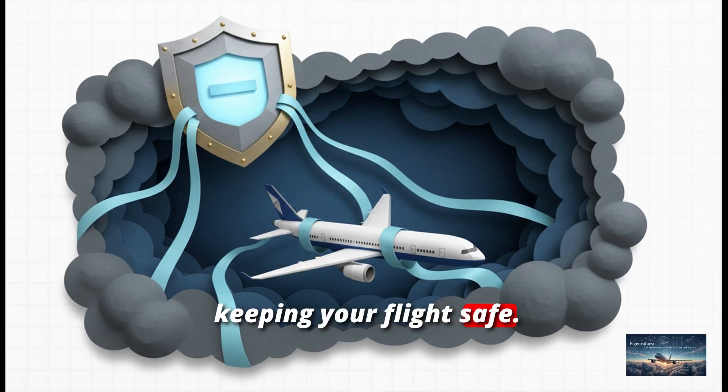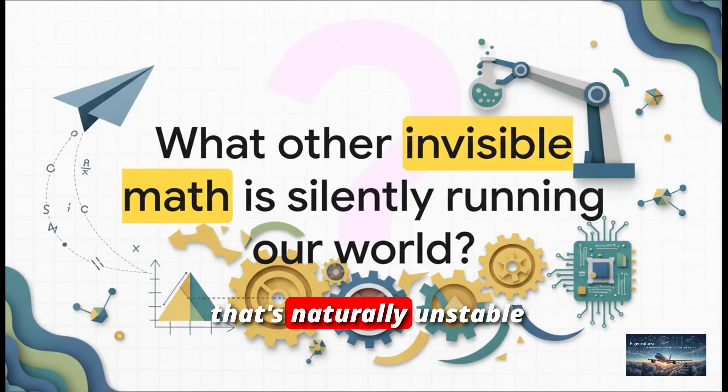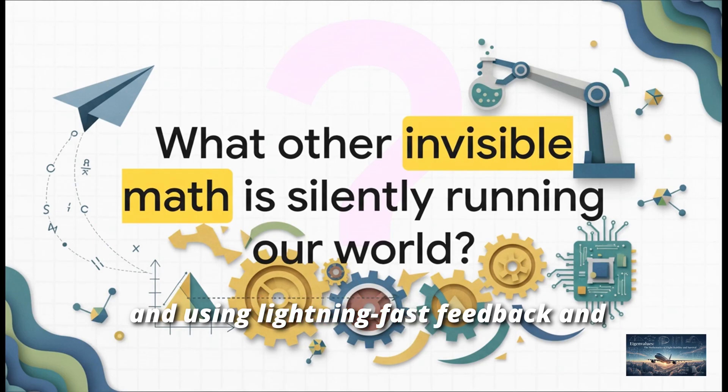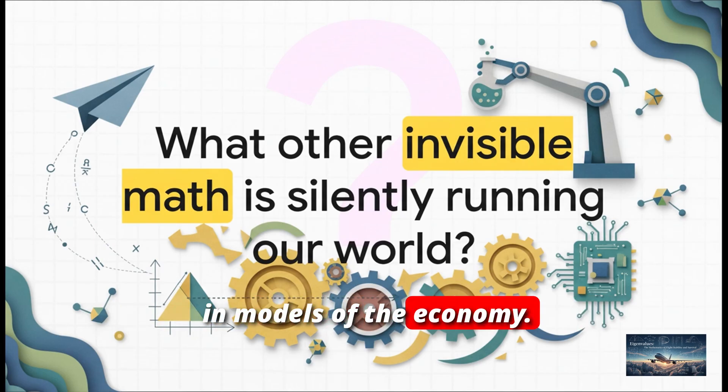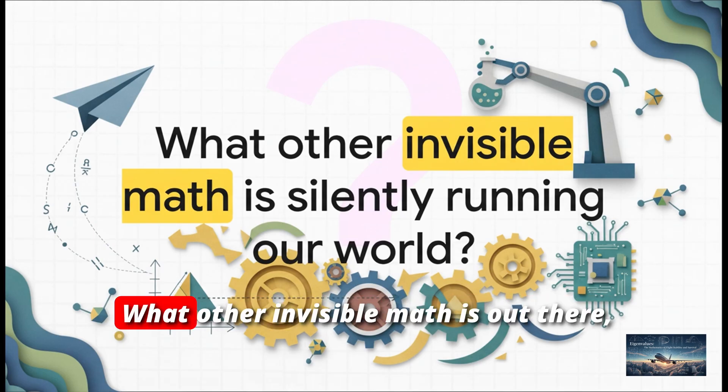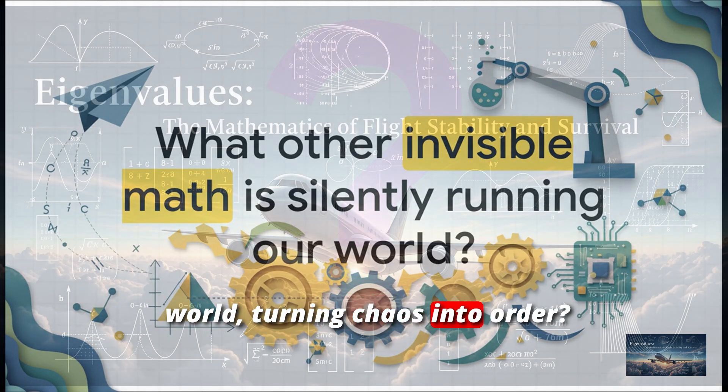That is the triumph of a well-placed negative eigenvalue calculated and controlled by a computer. It's linear algebra keeping your flight safe. And when you think about it, this core idea, taking something that's naturally unstable and using lightning-fast feedback and math to make it stable and useful, it's everywhere. It's how modern robotics work, it's used in huge chemical plants, even in models of the economy. It just makes you wonder, right, what other invisible math is out there, silently running our world, turning chaos into order.